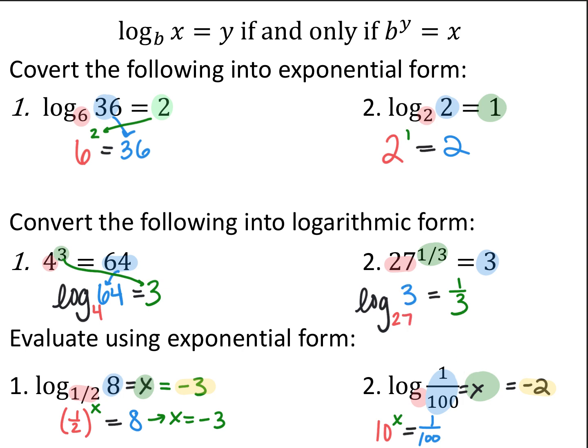And then the last one: if I want to evaluate log of 1 over 100, I notice there's no base, so when there's no base, that means it's base 10. My base stays the same, so 10 to some power is equal to 1 over 100. What power do I have to raise 10 to in order to get 1 over 100? It's the negative 2 power.